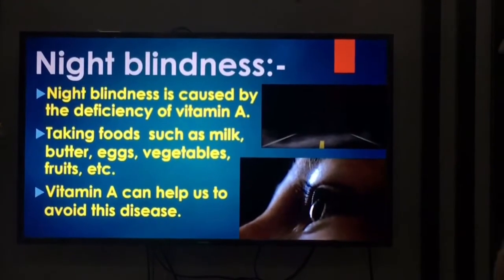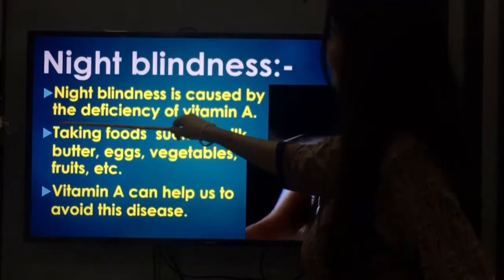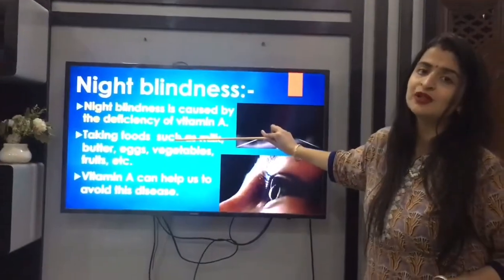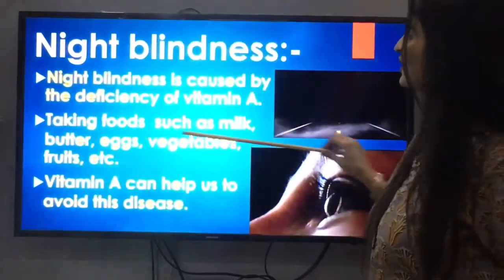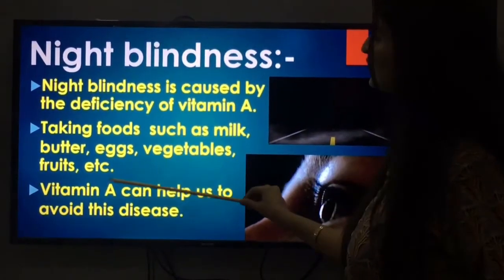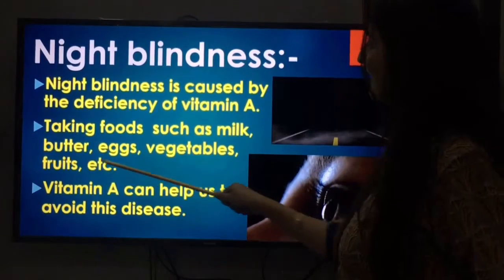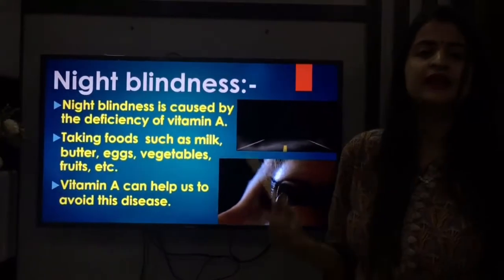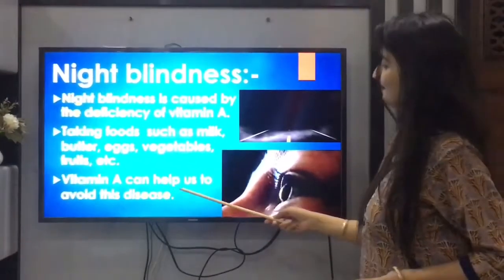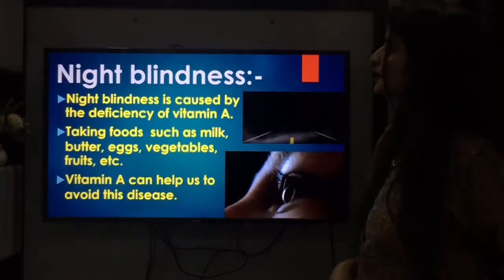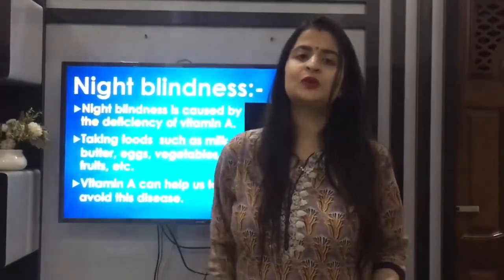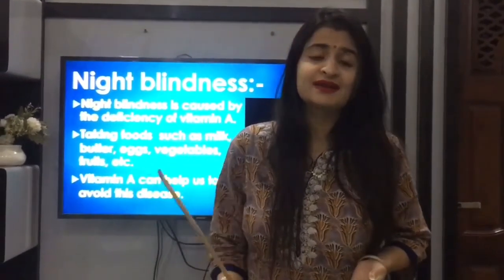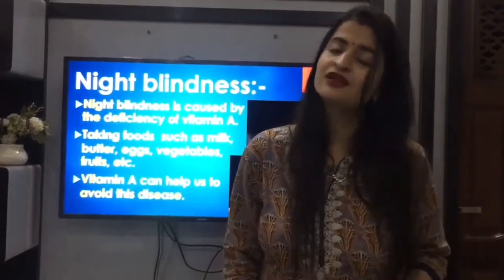What is night blindness? Night blindness is caused by a deficiency of vitamin A. If there is a deficiency of vitamin A in our body, we have a higher chance of night blindness. Taking foods such as milk, butter, eggs, vegetables, and fruit can help us avoid this disease. Vitamin A from these foods can prevent night blindness. It is necessary that we consume a glass of milk daily.